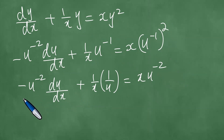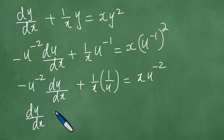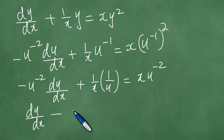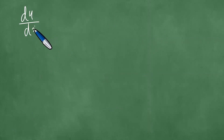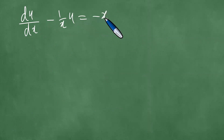We multiply through by minus u squared, both left and right. Therefore, du/dx minus 1 over x times u equals minus x. This is a linear first-order ODE, which is straightforward to solve.